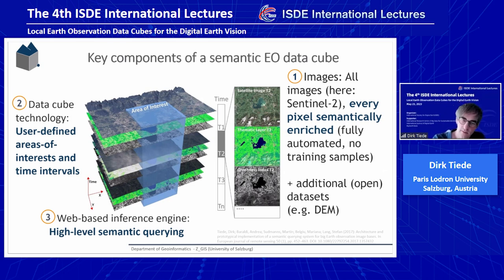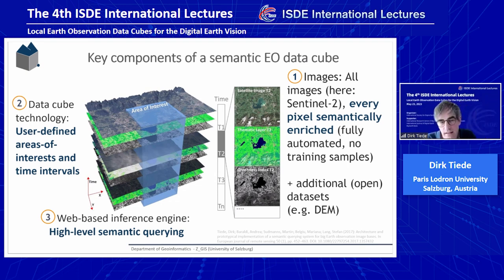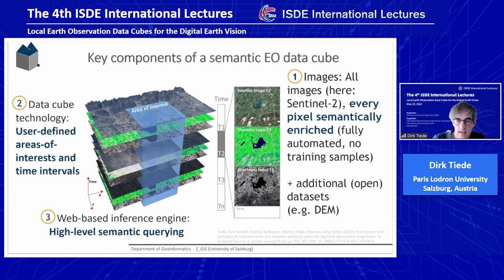These are the key components of a semantic EO data cube. Three main components: first, the images — we use all available images, whether cloudy, snowy, or perfect; every image and every pixel is taken and fully automatically semantically enriched. We use a physical model here, so no training samples are needed, making it transferable globally — it works everywhere and is reproducible. Additional geodata — elevation models, national data, thematic layers, different land cover datasets — can be integrated as well. On the left, the data cube technology is the core: user-defined areas of interest and time intervals abstract data storage from user access.